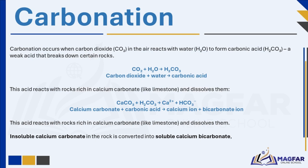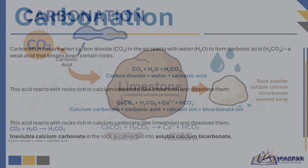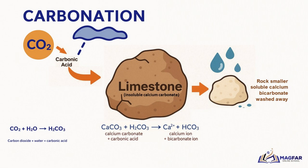Carbonation is an important type of chemical weathering. It occurs when carbon dioxide from the air reacts with rainwater or moisture in the environment to form carbonic acid, a weak acid that can chemically break down certain rocks. Although weak, this acid can slowly dissolve rocks rich in calcium carbonate, such as limestone. During this process, insoluble calcium carbonate in the rock is converted into soluble calcium bicarbonate, which dissolves in water and is washed away. This transformation is what we call carbonation.